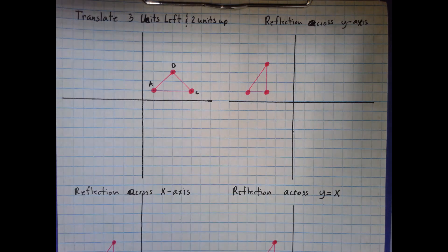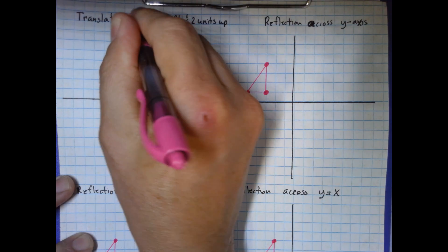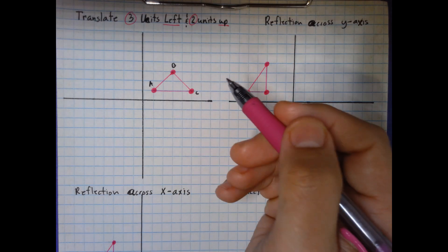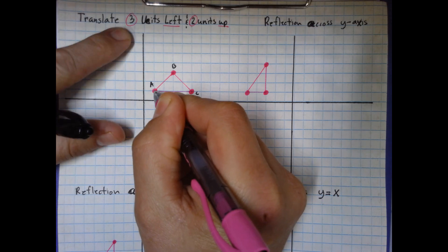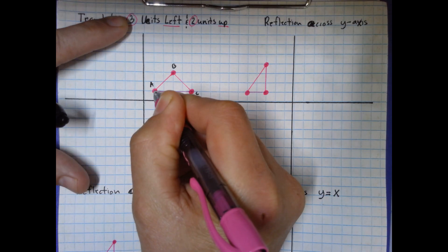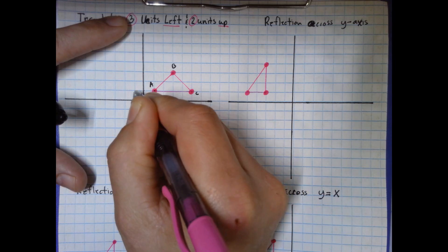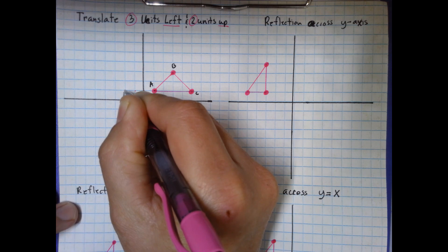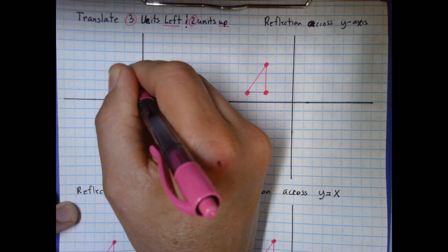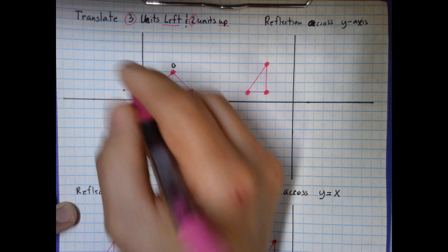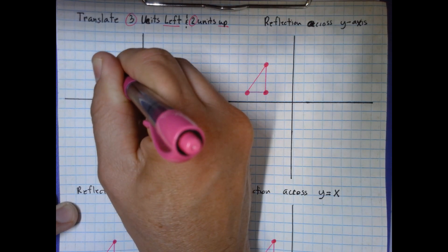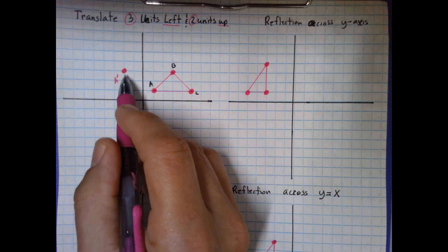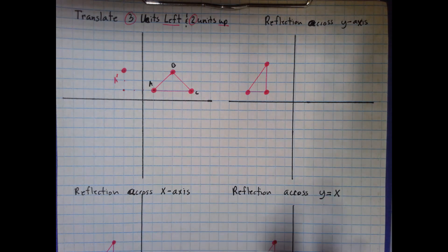To move three units left and two units up, I recommend finding one good point to start. Starting with A, I count three units to the left — one, two, three — and then two units up from that spot — one, two — and I place a point there. I label it A prime with a prime symbol, which looks like an apostrophe. So A has now moved three units to the left and two units up.